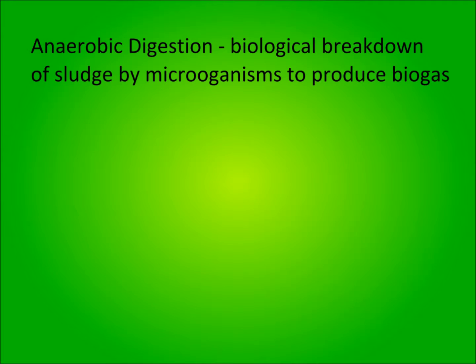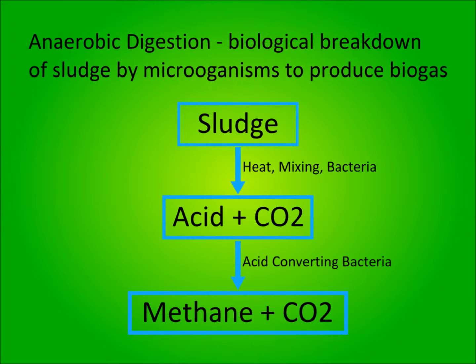Anaerobic digestion is a two-step fermentative process by which microorganisms break down the leftover organic matter. First, acid-forming bacteria convert the sludge medium into acid and carbon dioxide. Next, a second set of bacteria convert those acids into methane gas and carbon dioxide.